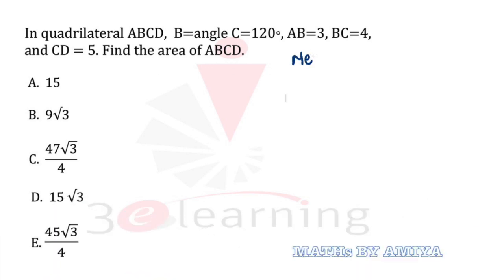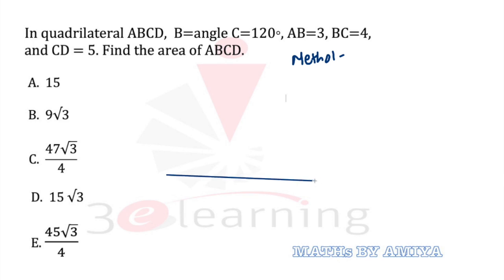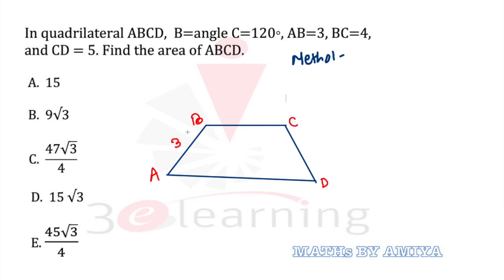First of all, I am going to discuss Method 1. Let's draw the diagram. We have ABCD — a quadrilateral where the angles are given. Let's name this one as A, this one as B, this one as C, this one as D. The dimensions are 3, 4, and 5. This angle is 120 degrees and this angle is also 120 degrees.